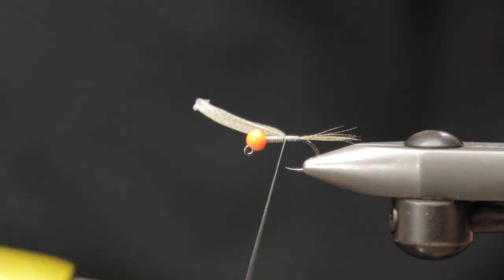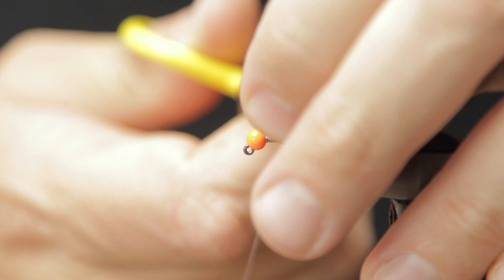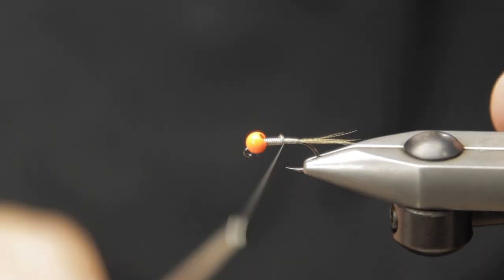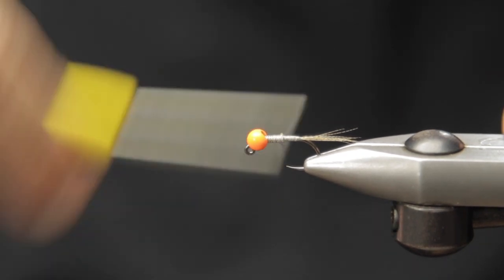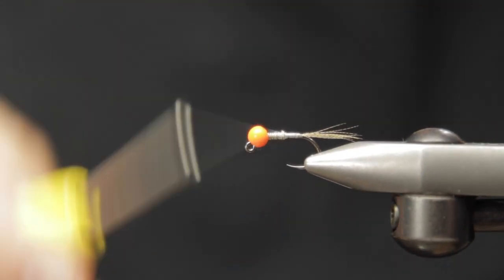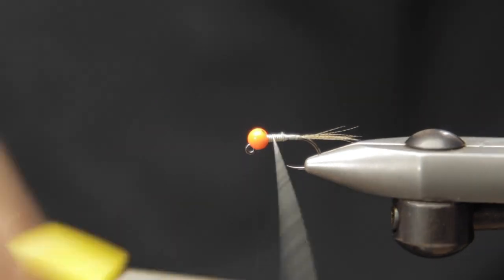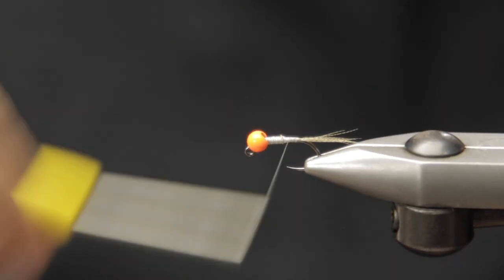Once I have the tail tied down, we'll go ahead and wrap forward, trim off the excess, and we'll go ahead and start lashing down our non-lead wire. You can do that before or after, it doesn't really matter.